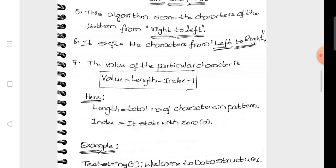The formula is: value = length minus index minus 1. Here, length is the number of characters in the pattern string, and index is the position of each character, starting from 0. The last index is length minus 1.